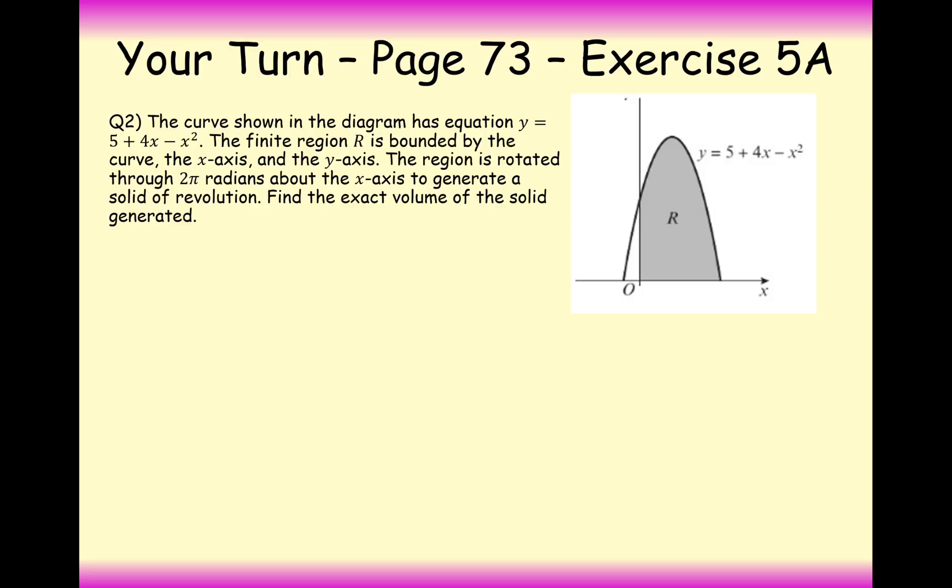All right, so your turn to have a go at this question here then. Pause the video and try this one out. All right then, well done for having a go at this question here then. So the first thing for us to do is to find the boundary, obviously the first one's going to be 0. Now it's either going to be 5 or maybe 1, so 5 plus 4 times 5 minus 5². Yeah, I've worked it out as 5, because that will be 0 eventually. So you don't need to do any sorts of fancy maths. You could maybe factorise this as a quadratic and then solve it. But if you can spot that it's 5, then just spot that it's 5.